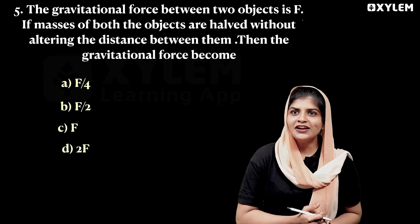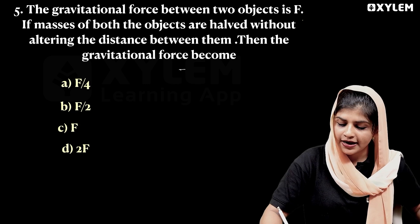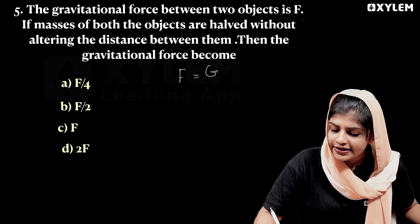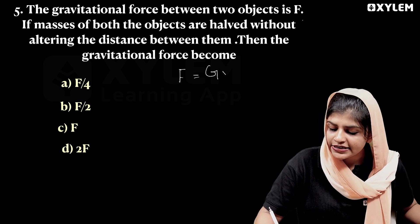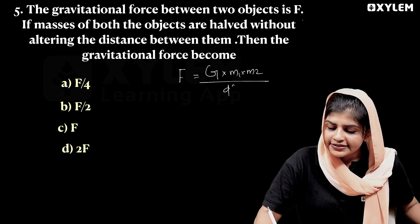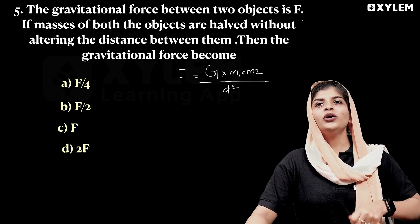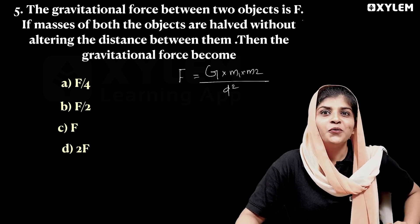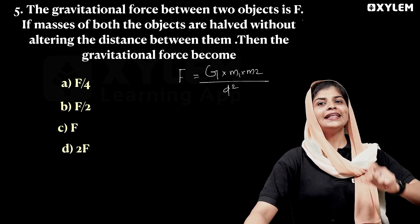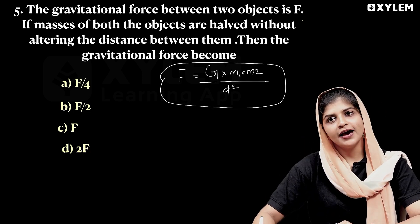Next question: the gravitational force between two objects is F. We call it F = G × M1 × M2 divided by D². And if the masses of both objects are halved without altering the distance between them, then the gravitational force will become?